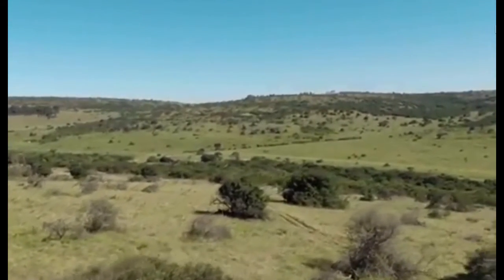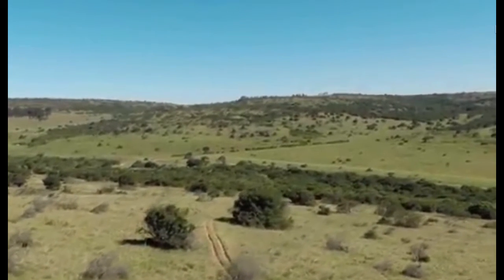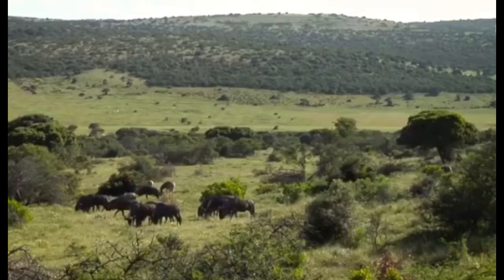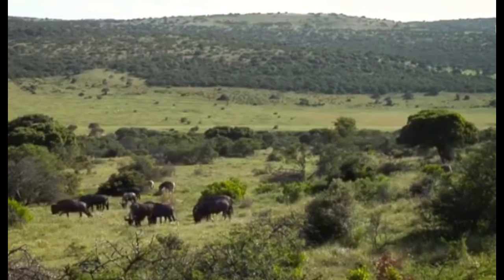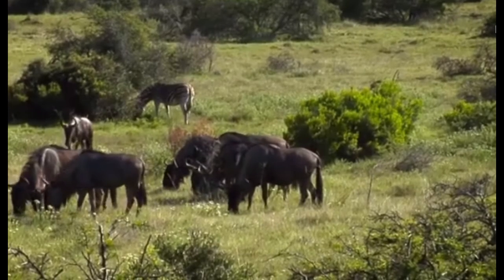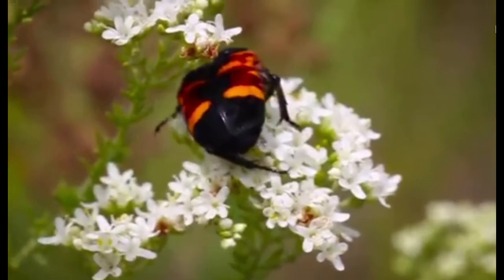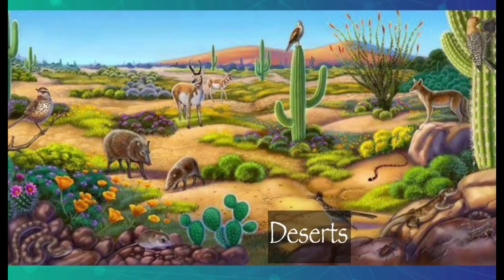Savannahs are a type of grassland that have wet and dry seasons. The wet season is very hot with strong winds and heavy rains. The dry season is cooler with little or no rainfall. Some savannahs have tall trees and short shrubs, while others do not have trees at all.